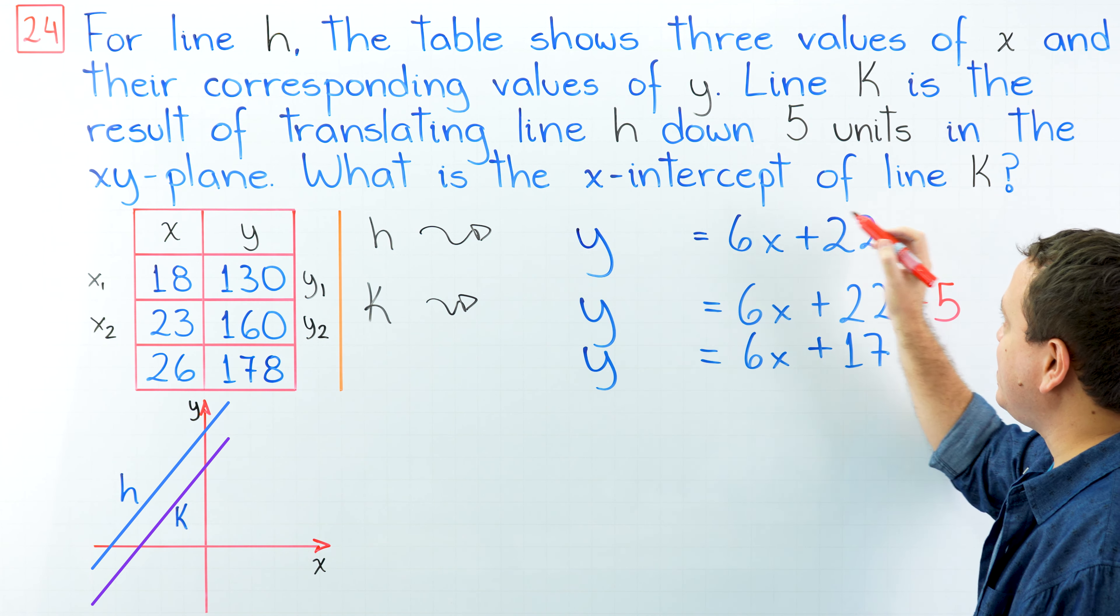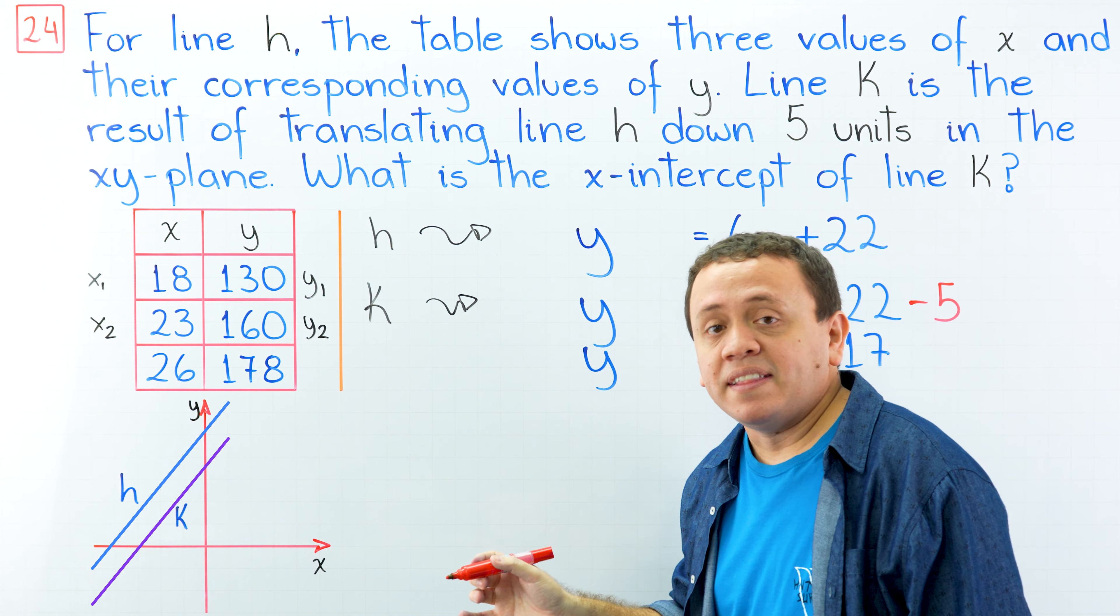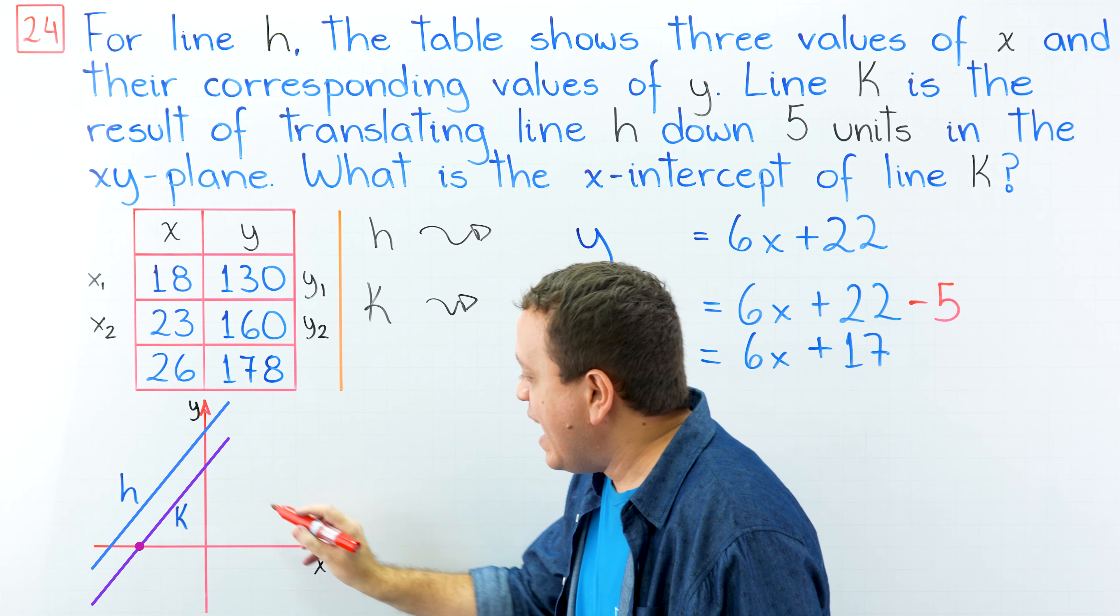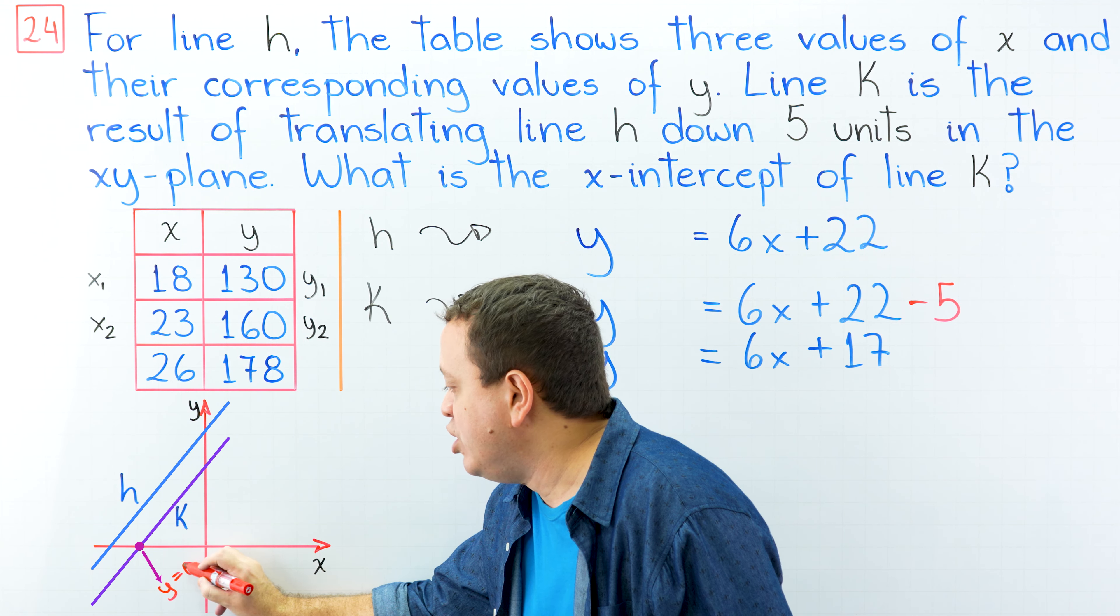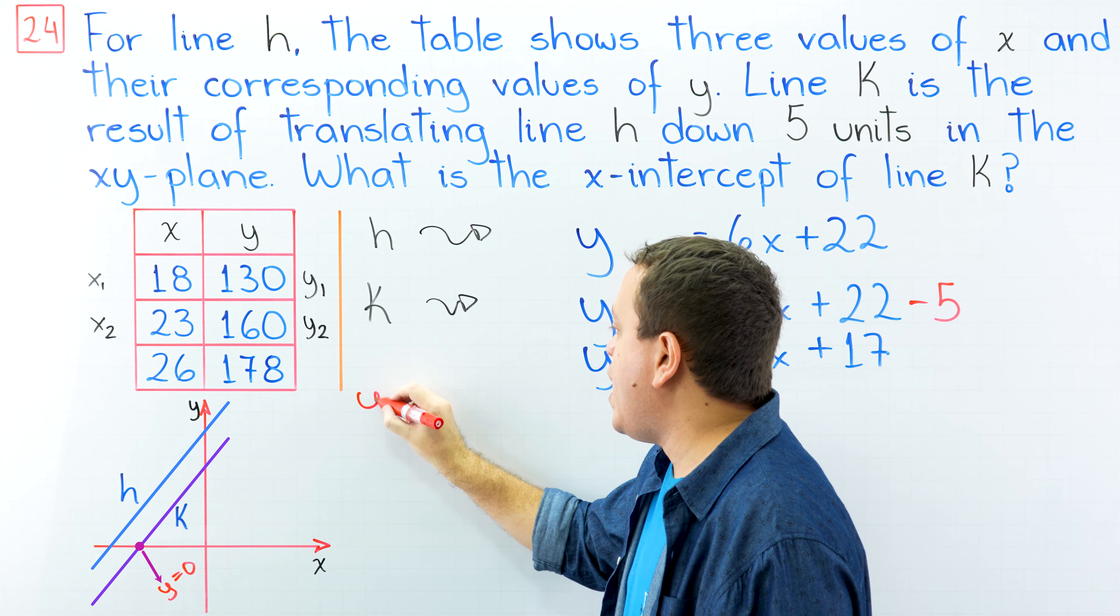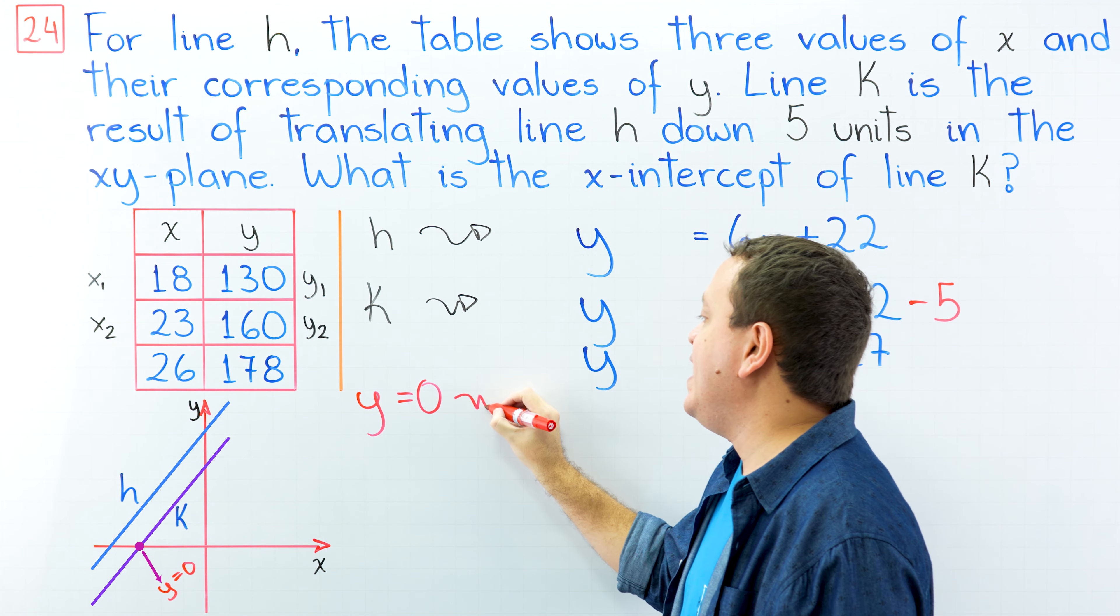Finally, we're going to find the x-intercept of line k. Remember that the x-intercept is the point where our graph crosses the x-axis. At this point, the value of y is equal to 0. Therefore, to find the x-intercept, we're going to set y equal to 0 and then solve for x.